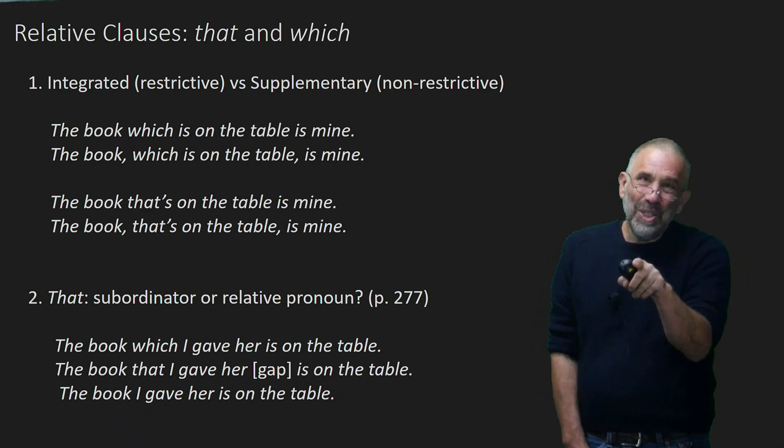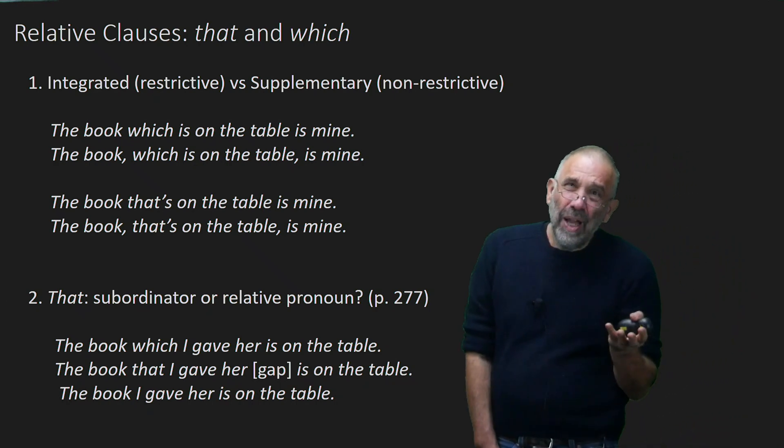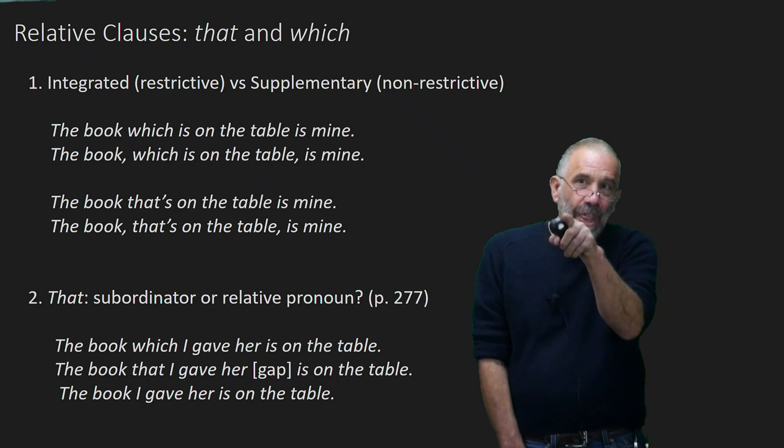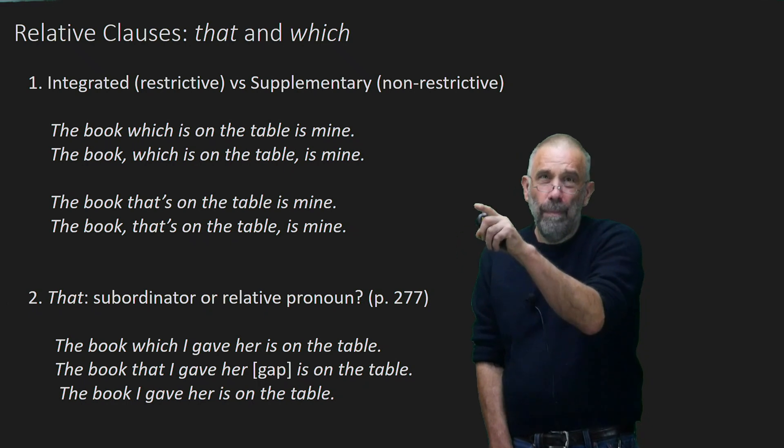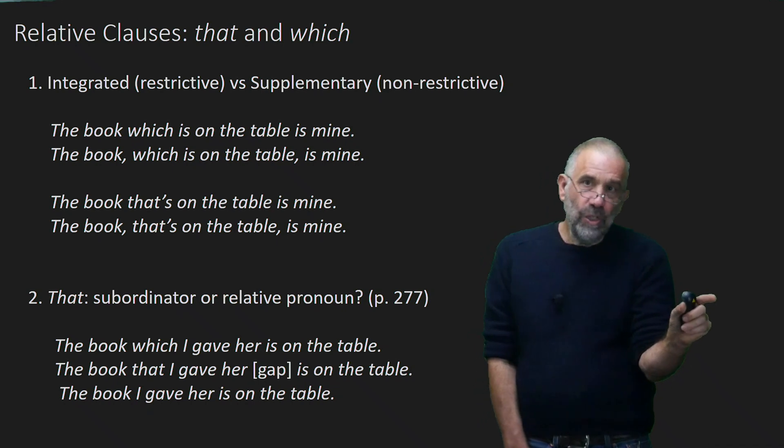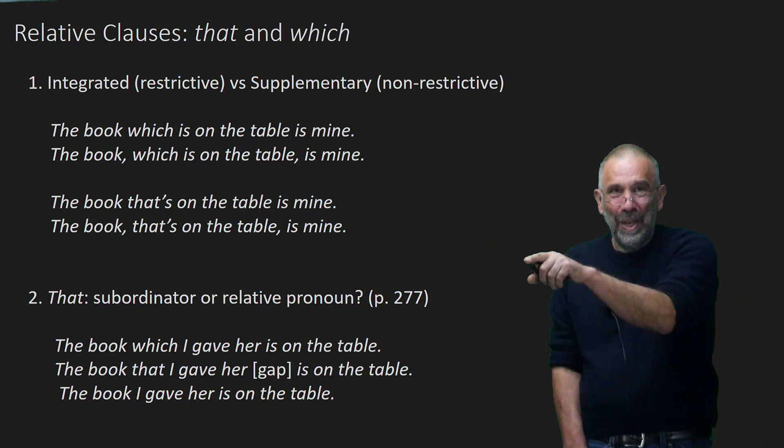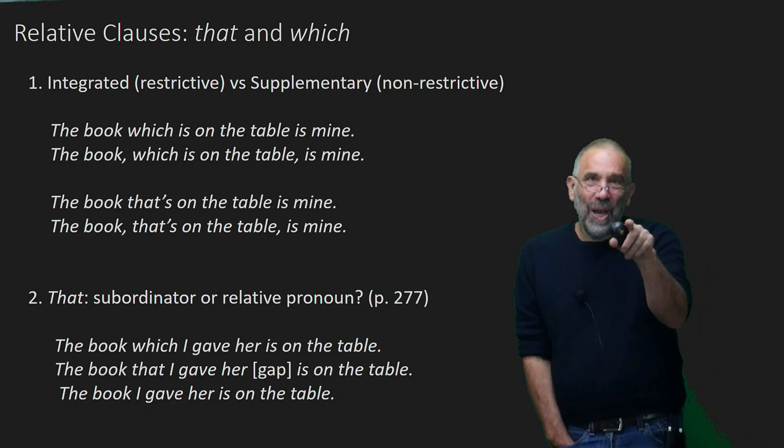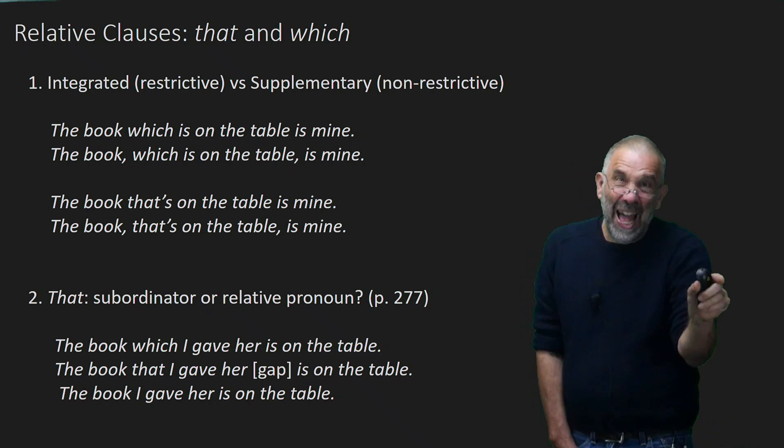So the book which I gave her is on the table sounds very much like the book that I gave her is on the table, but they analyze that second one as different. The that doesn't refer directly back to the book, but because it's still a subordinator, it opens up this gap at the end of the sentence, and it's that gap then which refers back. The book is on the table. I gave her that one.